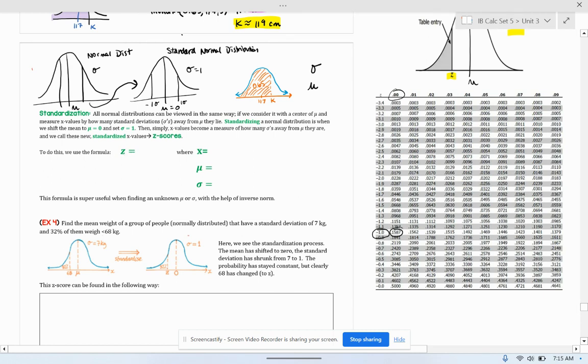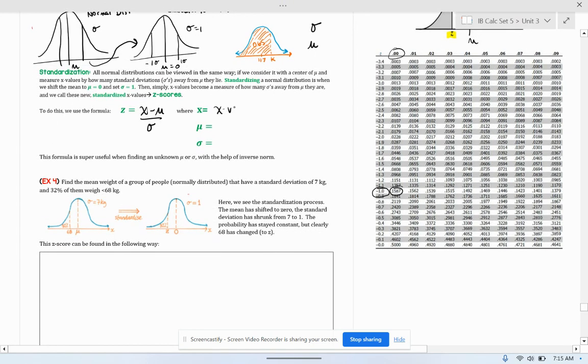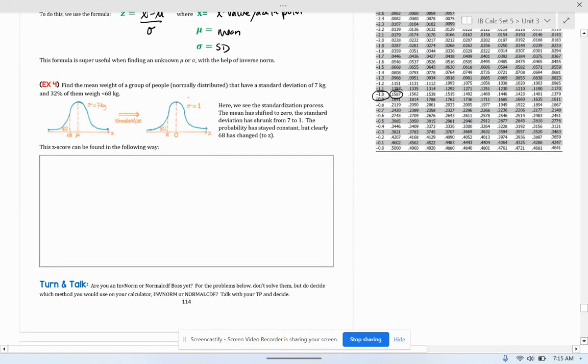This sounds like a lot of mumbo jumbo, but it's pretty much like you have an unknown sigma or you have an unknown mean. You can use the formula z equals x minus the mean over the standard deviation, where x is the x value or the data point that you're looking at. Mu is the mean and sigma is the standard deviation. So let's look at a problem and I'll show you how this works.